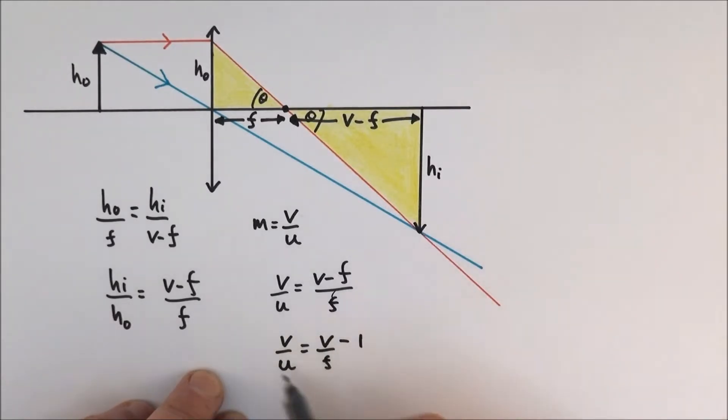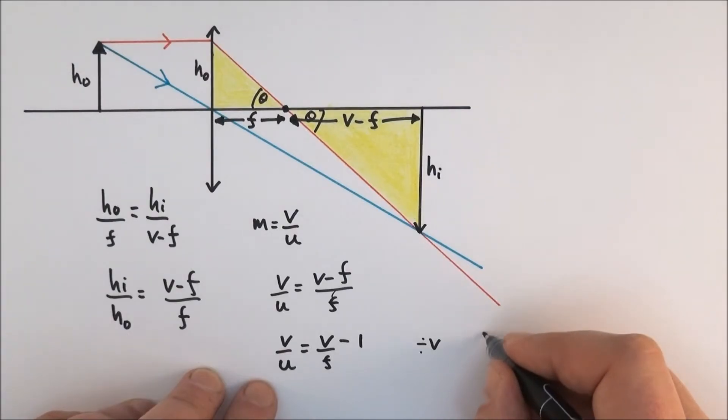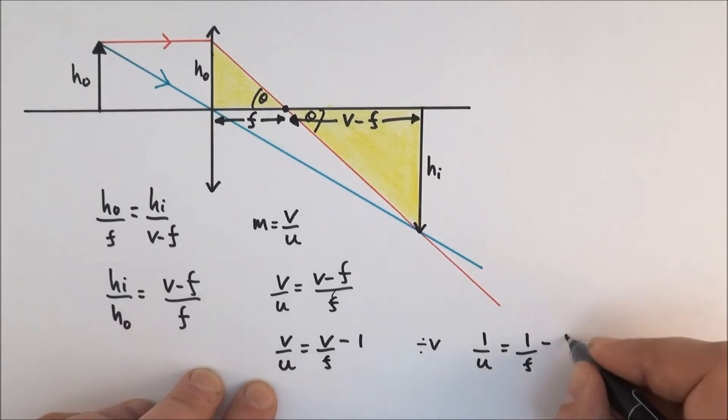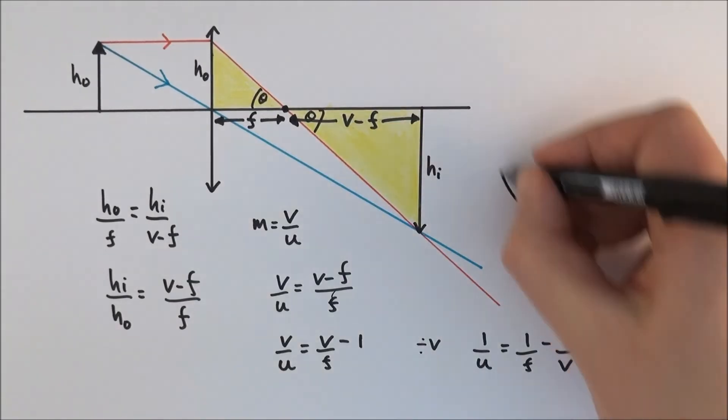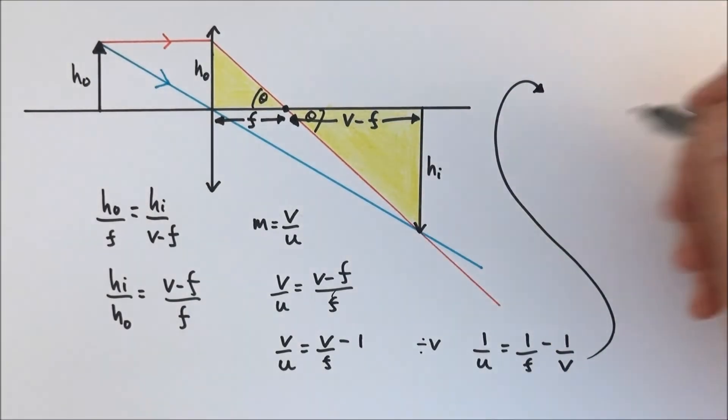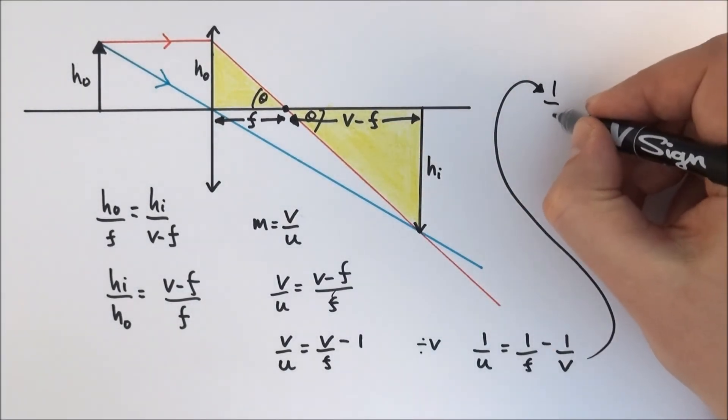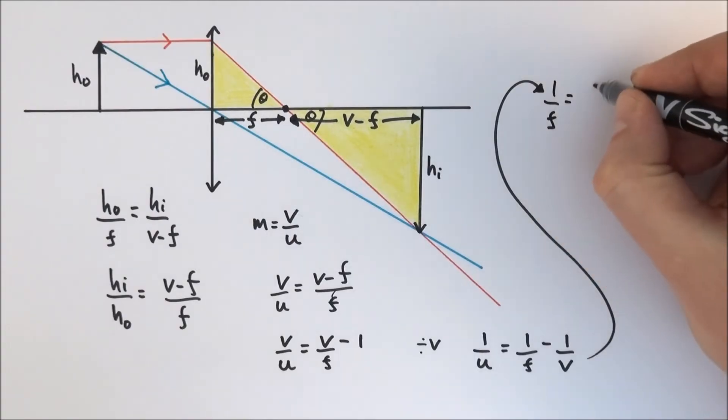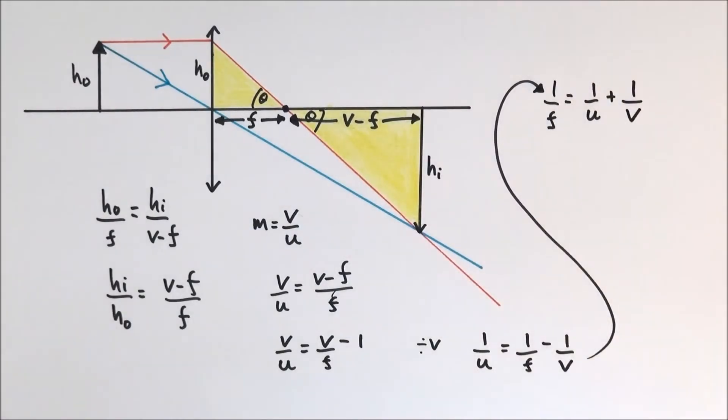What I can then do to this equation here is just divide everything by v. So v over u is just equal to 1 over u and that's equal to v over f which is now 1 over f minus 1 over v. And if I take this equation here I'll just write it up here at the moment. What we can then say is that if we make 1 over f the subject we can say that 1 over f is equal to 1 over u plus 1 over v and there we have it.